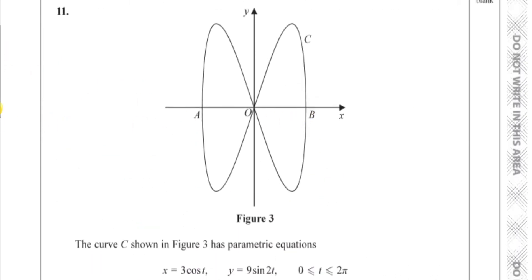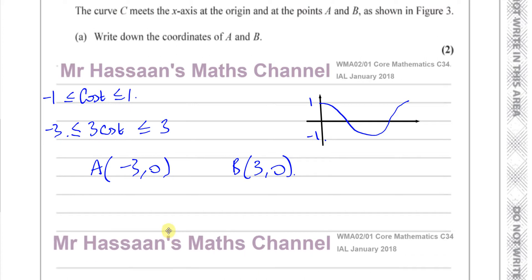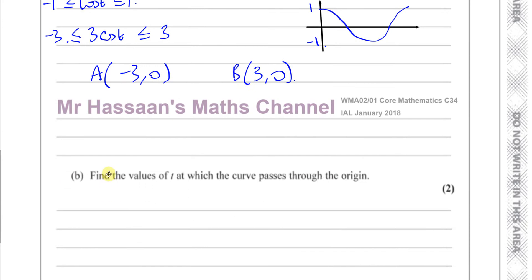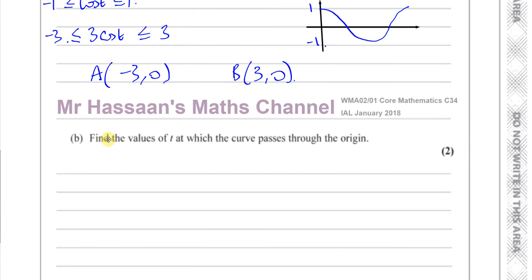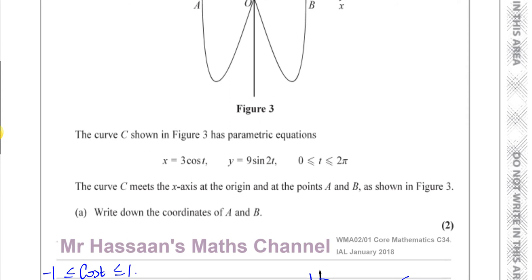B is over on the positive side. You don't really need to show any steps or find values of t for this, because it's a simple type of question — that's why it says 'write down'. We can see from the curve that A is the minimum x value and B is the maximum x value, so the lowest is minus 3 and highest is 3.